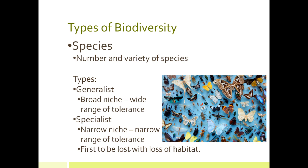Species biodiversity refers to having many different species in an area — for example, many different types of butterflies. There are two major types of species: generalists, which have a broad niche and a wide range of tolerance, and specialists, which have a very narrow niche. A niche is defined by what a species eats, what ecosystems it can survive in, and what temperatures it can tolerate.